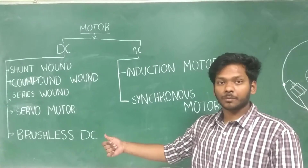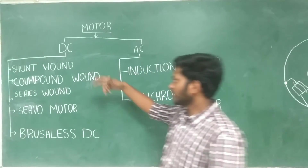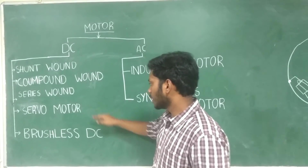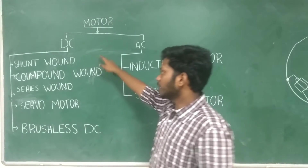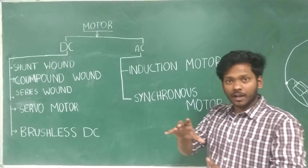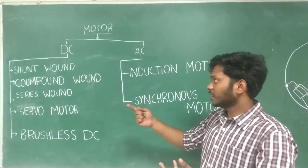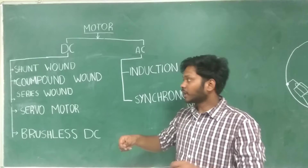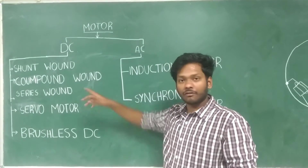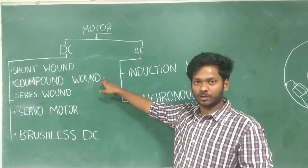Now we will see different motors in DC. Basically, DC motors are divided into different kinds: shunt wound, compound wound, series wound, servo motor, and brushless DC motor. Shunt wound and compound wound refer to the winding configuration in a motor — you have a rotor and an exciting winding. If the winding is in parallel to your rotor, then it's shunt. If it's in series with your rotor, it's series. And if you have both series as well as parallel, then you call it compound wound.